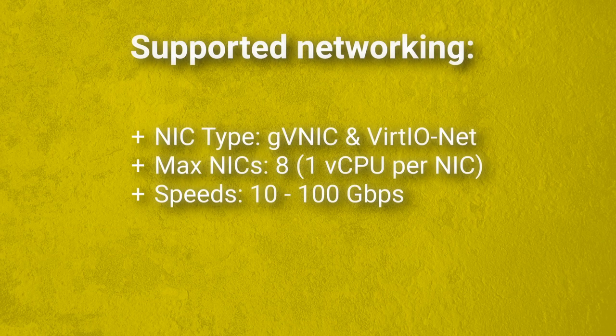Supported networking includes 2 different NIC types: GVNIC and VirtIO. Maximum supported NICs is 8, but you must have at least 1 vCPU per NIC, and speeds range between 10 and 100 Gbps.